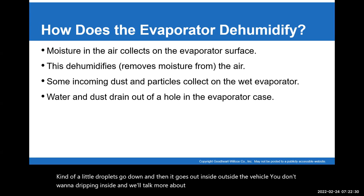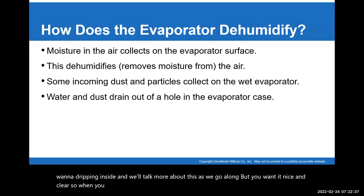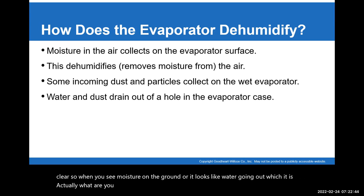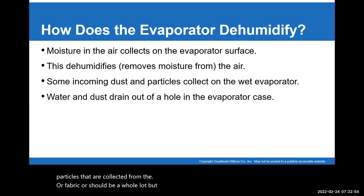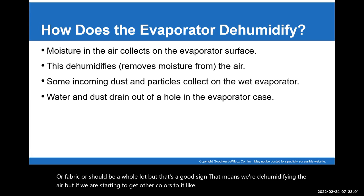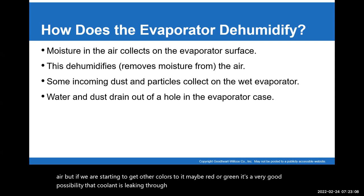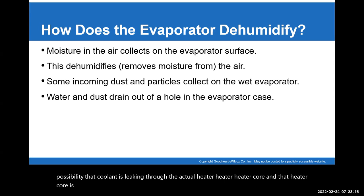You don't want it dripping inside — you want it draining outside, nice and clear. When you see moisture on the ground or water going out, that's a good sign — it means we're dehumidifying the air. But if you start to get other colors, like maybe red or green, there's a very good possibility that coolant is leaking through the heater core. That heater core is starting to leak in, and that's not a good thing. We'll talk more about that when we get into the heating section.